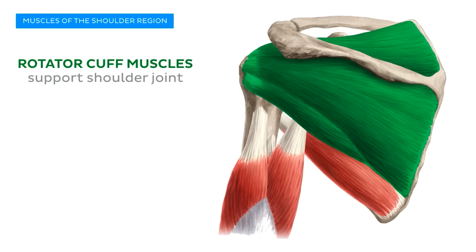We have just one more muscle to discuss: the teres major, the big brother of the teres minor. The teres major muscle has its origin around the inferior angle of the scapula. It has a longer belly than its little brother, which reaches anterosuperiorly to insert along the anterior aspect of the humerus, specifically the crest of the lesser tubercle.